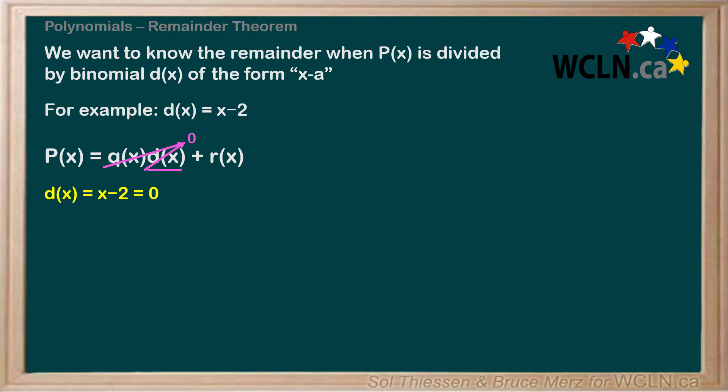We add 2 to both sides, giving us x equals 2. Note that 2 is also the a value from our divisor of the form x minus a. Now that we've found the value of x that sets our divisor to 0, we can evaluate the division statement at this value of x.